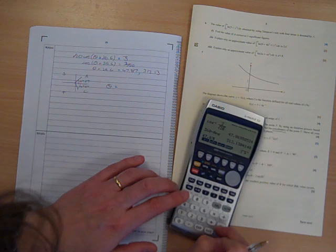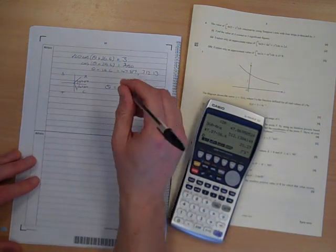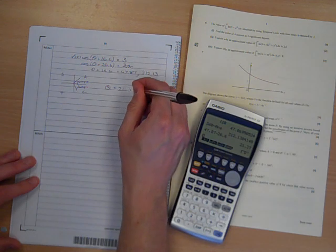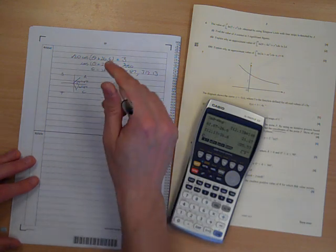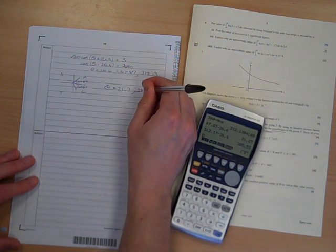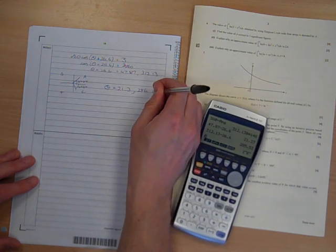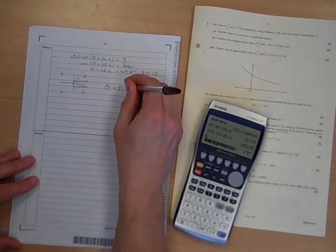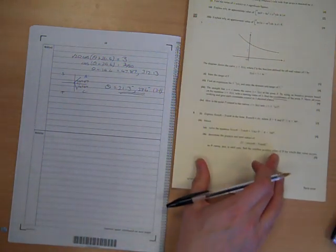So 47.87 minus our 26.6 gives us 21.3. And that other one, 312.13, take away 26.6 is 286, I think. 285.6, 286. There we go. I feel I ought to have done something with saving the values in the memory, but anyway.